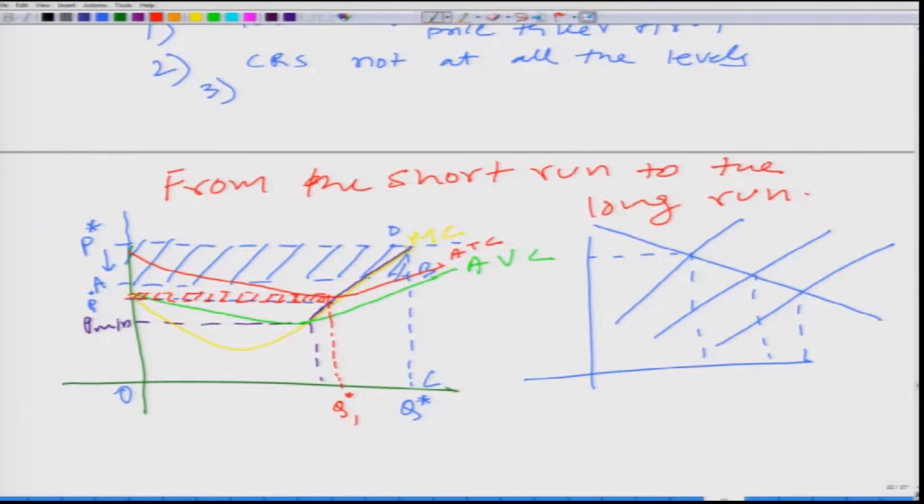When firms exit the market, the market supply goes down. When market supply goes down, the supply curve shifts upward and in this case what will happen? The market price will increase.